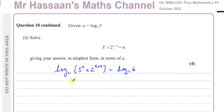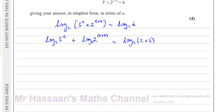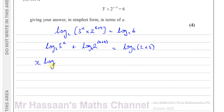I've taken log to the base 2 of both sides. Using the addition law to split the left side, I have log to the base 2 of 3 to the power of x plus log to the base 2 of 2 to the power of x plus 4, equals log to the base 2 of 6. Now I can see 6 as 2 times 3, so I write the right side as log to the base 2 of 2 plus log to the base 2 of 3.